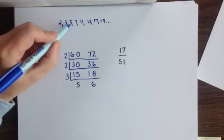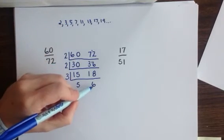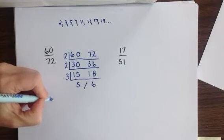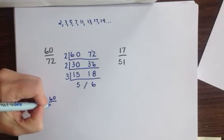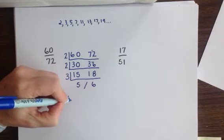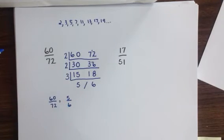5 is a prime number, and it's not a multiple of 6. So this fraction is fully reduced, leaving us with the result that 60 over 72 is equivalent to 5 sixths.